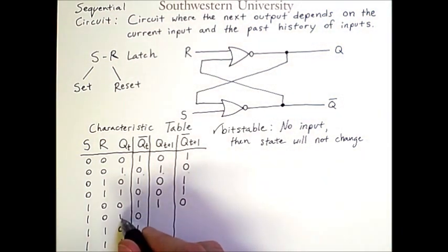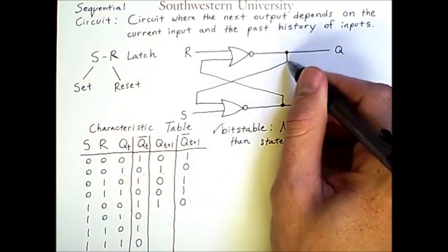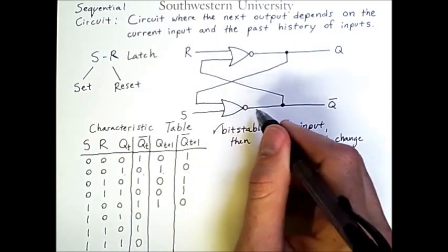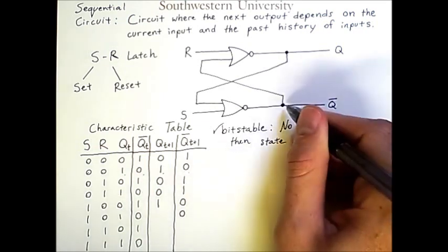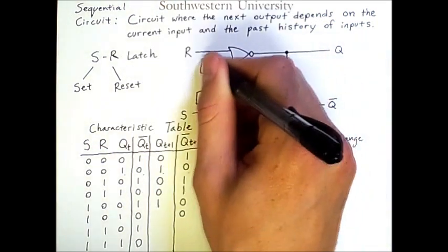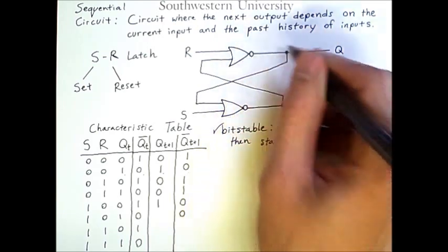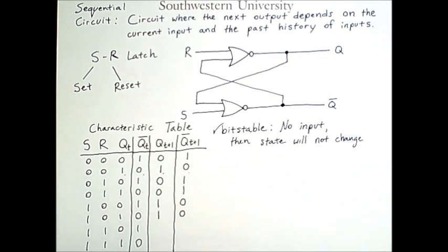Likewise, if the initial value of Q had been one, and then we set S to one from zero, previously a one had been coming in on this line. One or one is one, negated is zero. Therefore, NOT Q is zero. That zero also goes along this line into this gate. Zero or zero is zero, negated is one. The new output for Q is one.